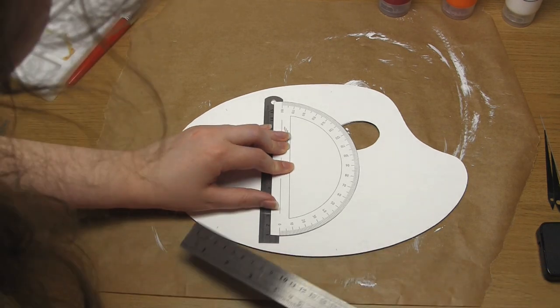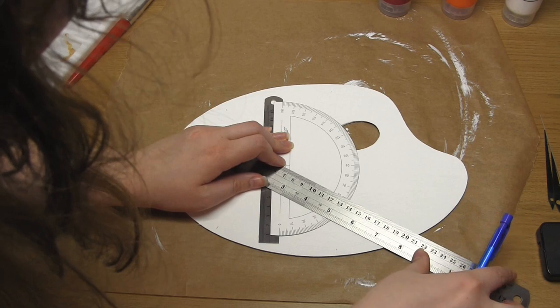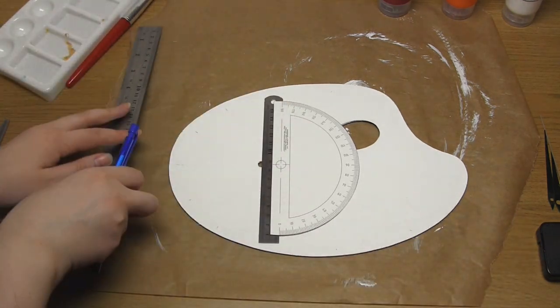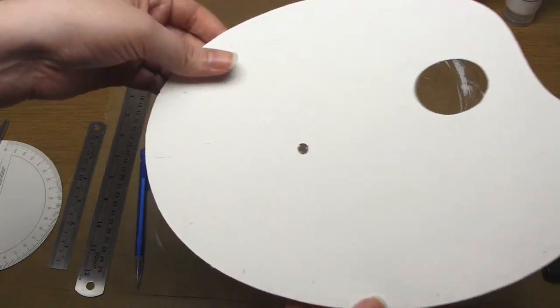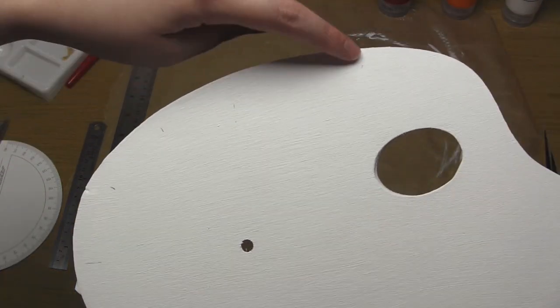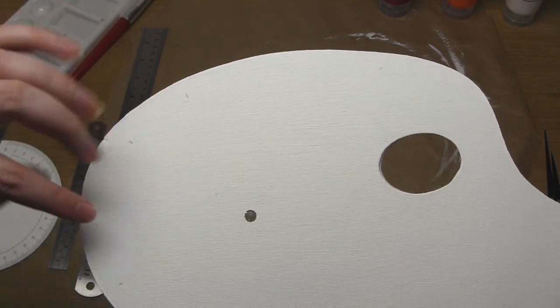Note that as the palette becomes elongated towards the right hand side, the edge gets further away from the spindle, so the pencil marks get further apart. How many numbers you represent and where you position them in relation to the edge of the palette is completely up to you.